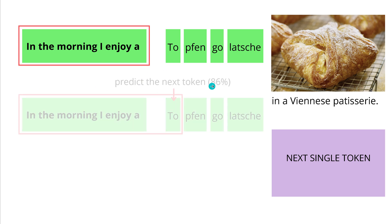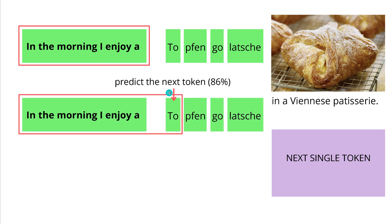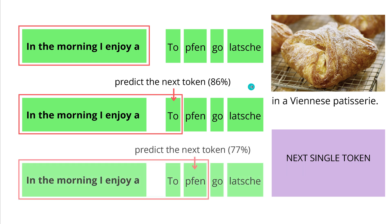And then we go on. We have, for example, a probability of 86%. Next, we go to 'toe' and 'fan.' You see how we slide along and predict the next token in a logical sequence. This is where we do today our autoregressive next single token prediction.